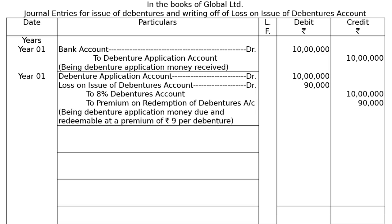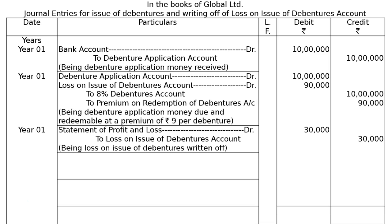Year 1 is now recorded. The premium on redemption of Rs 9 per debenture represents the loss on issue, totalling Rs 90,000, which is to be written off over 3 years to the statement of profit and loss. Towards the end of year 1, statement of profit and loss is debited Rs 30,000 and credit is given to loss on issue of debentures account Rs 30,000, being loss on issue of debentures written off.